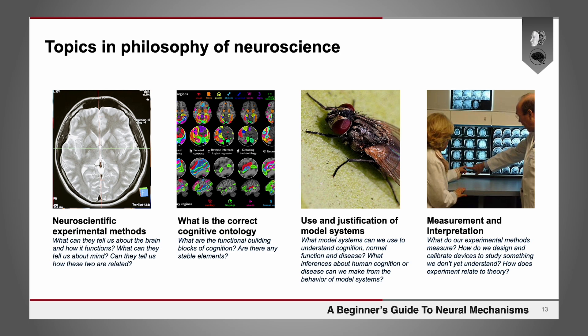There are questions about our neuroscientific experimental methods. We can ask what they can tell us about the brain and how it functions, what they can tell us about the mind — and those things might be different. Can they tell us how those two things are related? How does mind arise from brain?